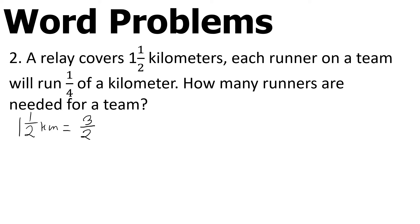Let me change this to improper fraction to make it easier. One and one-half becomes three-halves kilometers. Each runner on a team will run one-fourth kilometers. Should I multiply? Minus? Subtract or add? What should I do? Comprehend it again.